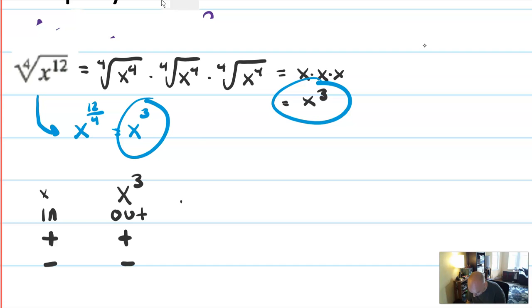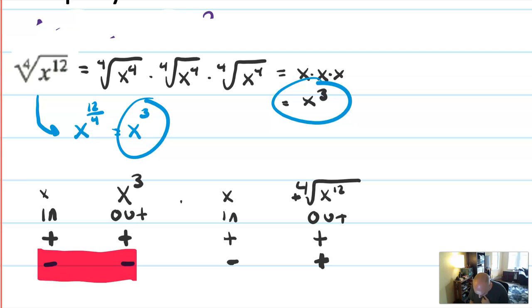But let's think about the original expression. So x and then the fourth root of x to the twelfth. If my input is positive, well, x to the twelfth will be positive, and the fourth root will be positive. So my output would be positive. But if my x is negative, it will be taken to the twelfth power, which makes it positive. So it is allowed to be negative. But then I'm taking the positive fourth root. Remember the assumption. So the output would be positive.